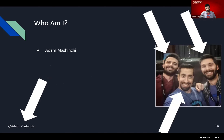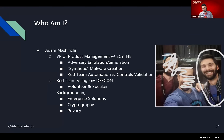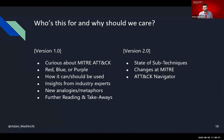Really quick — who am I? I'm Adam Mashinsky. I'm often confused with these other folks, especially because now I think all of us have beards too. I'm the VP of product for Scythe — we do adversary emulation and simulation, synthetic malware creation, red team automation, controls validation. I also do some work with the Red Team Village at DEF CON as a volunteer speaker, and I've got a background in enterprise solutions, cryptography, and security.